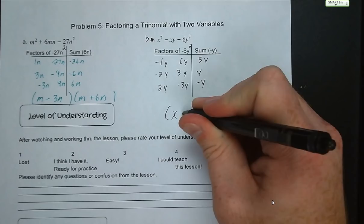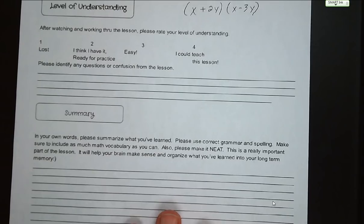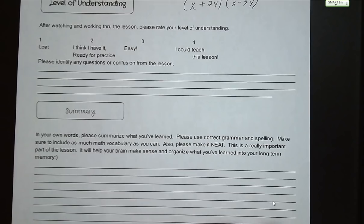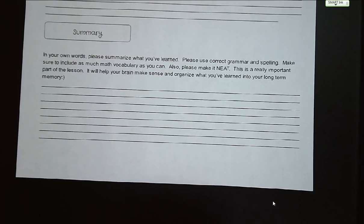Rate your level of understanding of this lesson from 1 to 4 - make sure you're being honest. Write down any questions or confusions you may have over this lesson so we can address them in class tomorrow. Make sure you fill out your summary of what this lesson was about and how you can factor equations in the form x squared plus bx plus c. That's the end of our lesson for tonight. Have a great night.